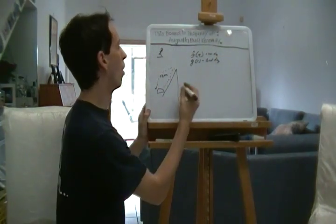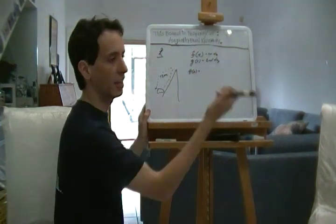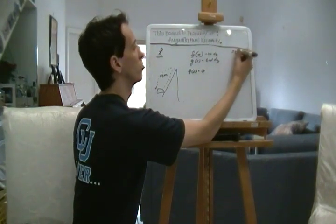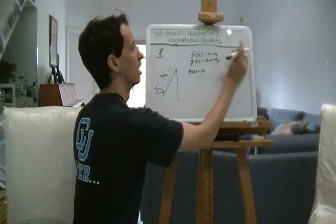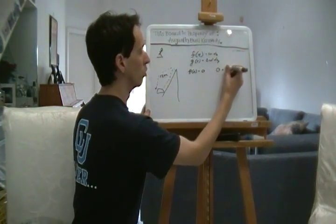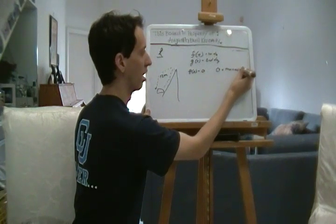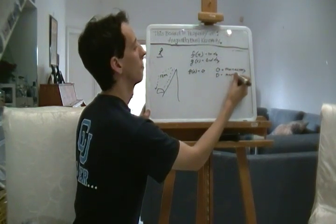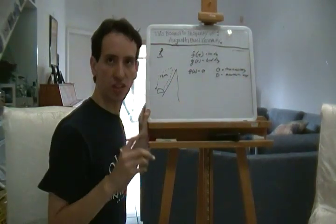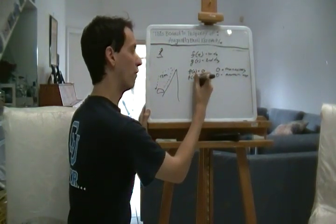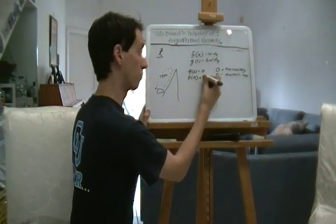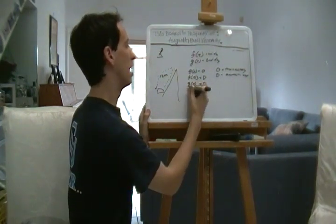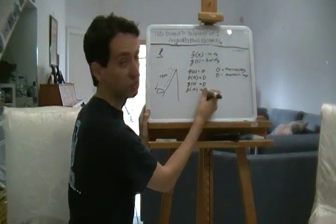Now, what do we know? We know that at f of 0, at the beginning of the day, at 7 a.m., he was at 0. Let's call 0 equals monastery. And d equals mountaintop. So, f of 0 is 0. 12 hours later, f of 12 is d. Meanwhile, g of 0 is d. And g of 12 is 0.